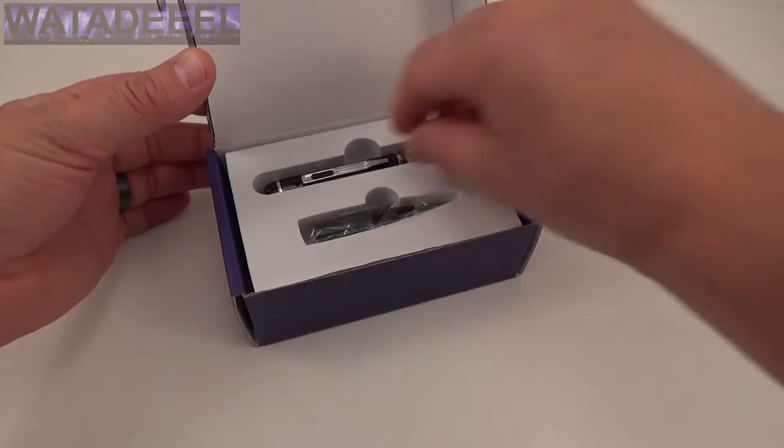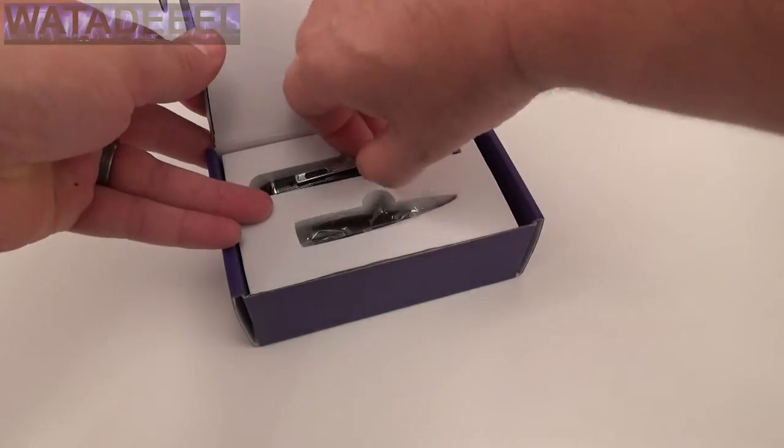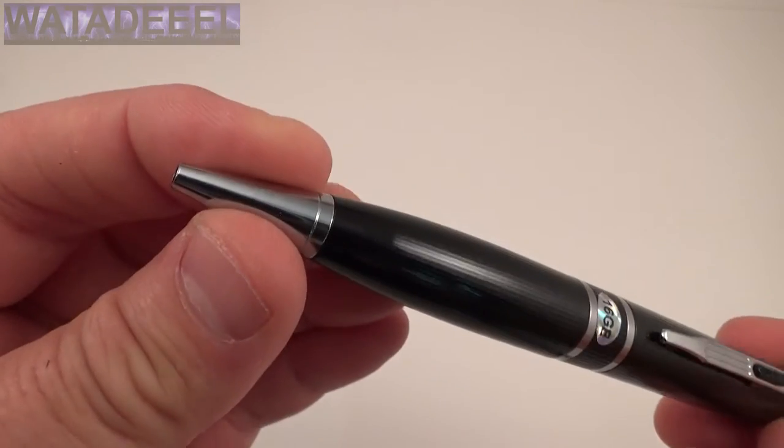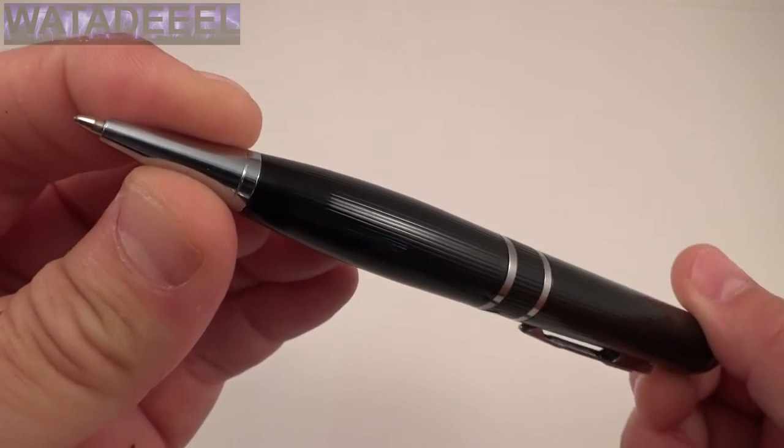Okay, quick video showing you a few things about this spy pen. I'll pull one out of the box here, put it together like this. First off, this pen, in order to write with it, you turn the base down here and that makes the little pen component come out.